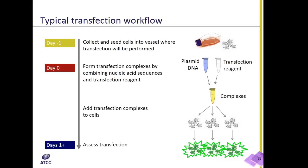Here's a typical transfection workflow. You start off with cells that are very healthy and in mid-log phase growth, and should be about 70% confluent on the day of transfection. The nucleic acid is allowed to complex with the transfection reagent, which generally takes about 15 to 30 minutes depending on the transfection reagent. Then the complex is added to the cell culture.